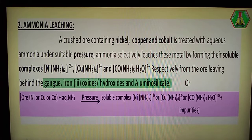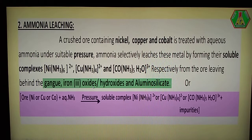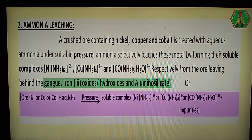The impurity gangue particles include iron(III) oxide (ferric oxide), iron hydroxide, and aluminum silicate. Iron metal is generally a gangue particle from nickel ore and copper ore. These gangue particles are left behind in the ore. This is a very important technique, but the ammonia leaching process is only applicable for nickel, copper, and cobalt metallic ores.